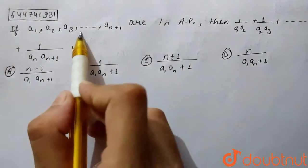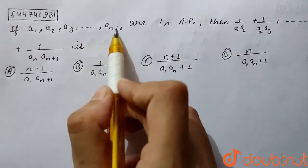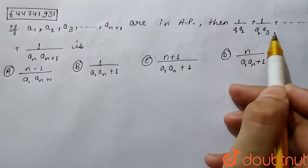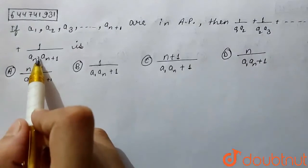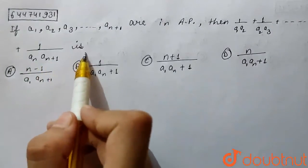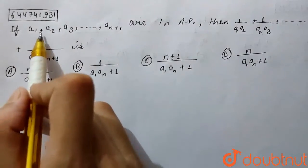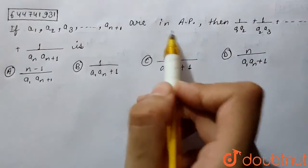If a1, a2, a3 till an plus 1 are in AP, then 1 by a1a2 plus 1 by a2a3 till 1 upon anan plus 1 is. So in this question we are given a1, a2 are in AP and we have to find this.